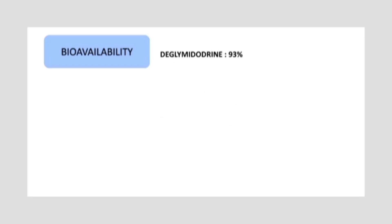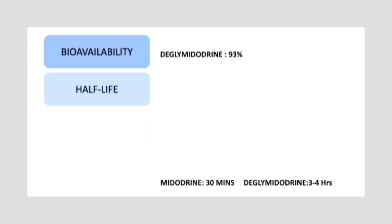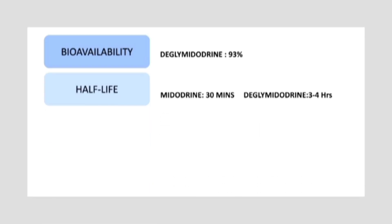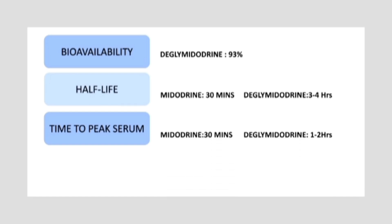Talking about the bioavailability of desglymidodrine: after absorption, midodrine passes through the first-pass effect, where in the liver it is converted to its active metabolite, showing 93% bioavailability. The half-life of midodrine is 30 minutes, and that of desglymidodrine is 3 to 4 hours — another reason why midodrine is given as a prodrug due to its short half-life. The peak serum levels of midodrine and desglymidodrine occur at 30 minutes and 1 to 2 hours, respectively.